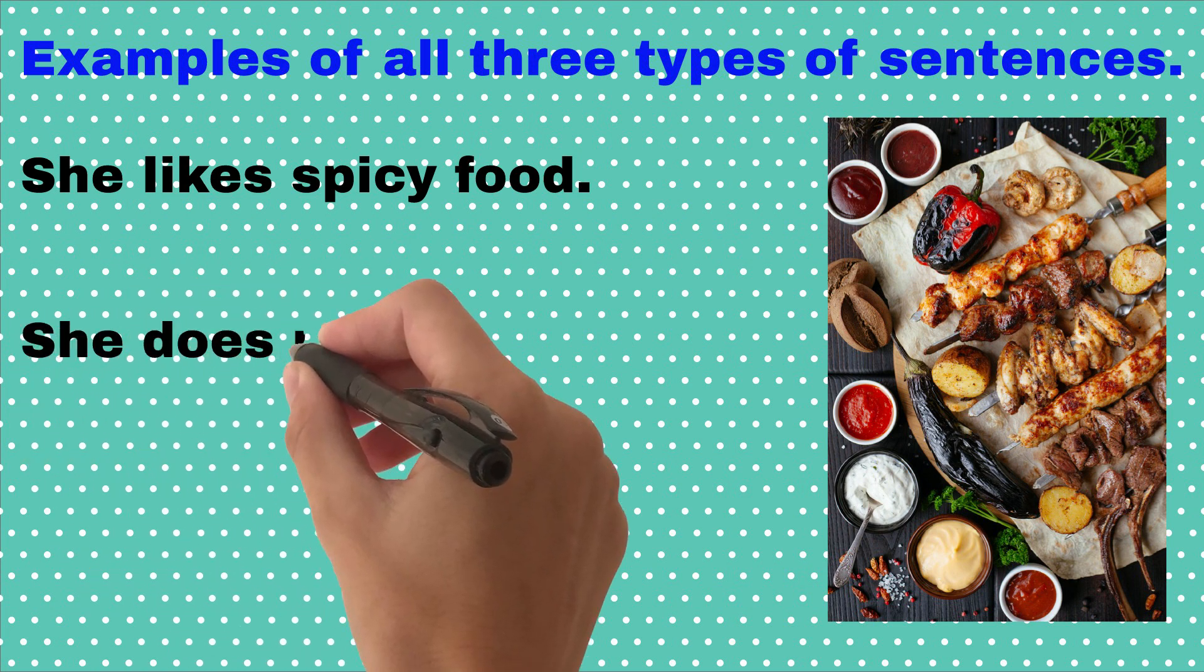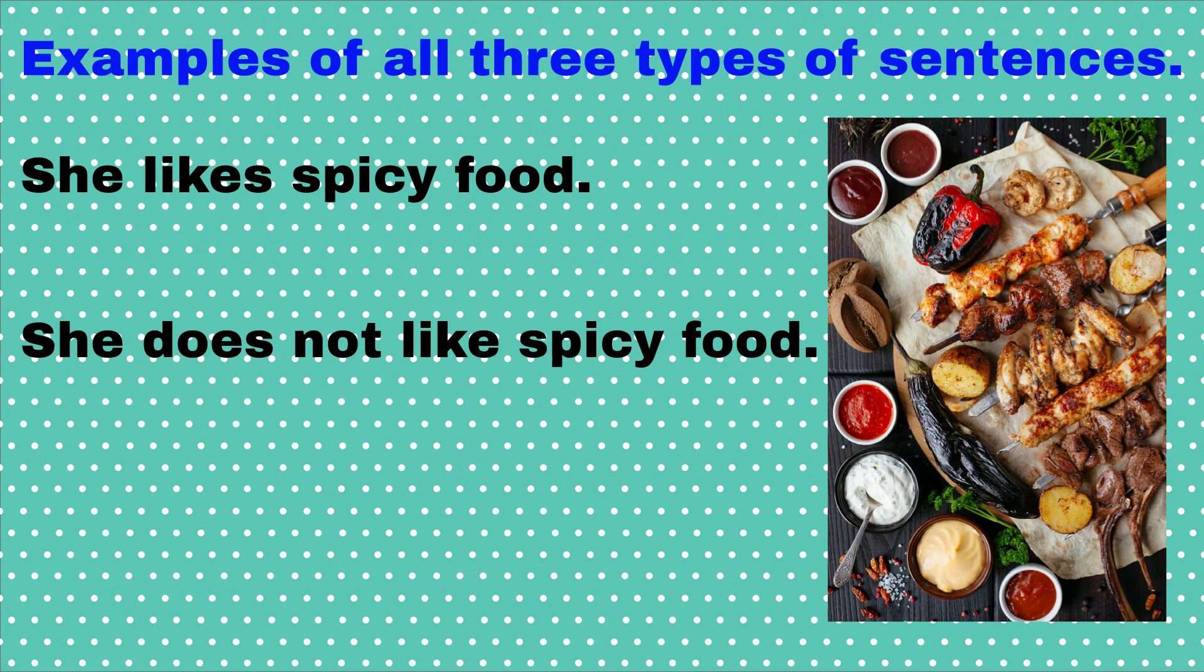She does not like spicy food. While making its negative, we will add does as a helping verb with she, and remove es with the verb like.